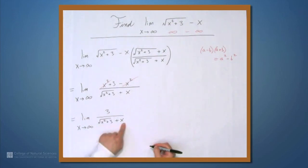This 3 is fixed, this denominator is going to infinity, so the limit is 0.